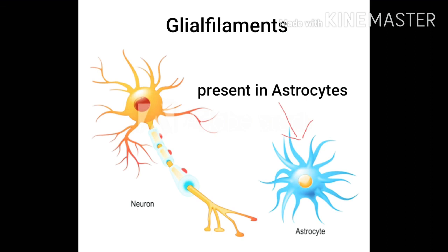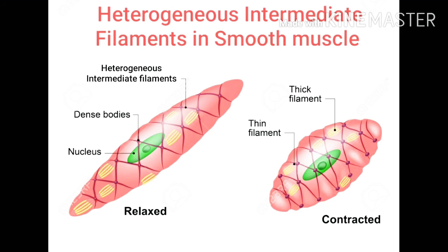The third type of intermediate filament is glial filaments. Glial filaments are found in astrocytes. Astrocytes are also a type of nerve cell present in nervous tissue — neurons are present along with a different type of nerve cell which we call astrocytes. In astrocytes, the intermediate filaments present are called glial filaments. The fourth and last type of intermediate filament is heterogeneous filaments, and these heterogeneous filaments are found in muscles.